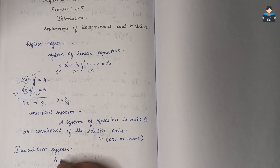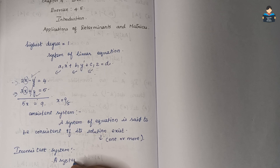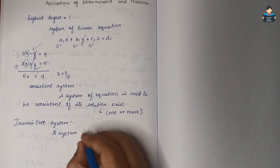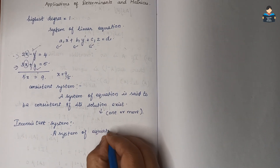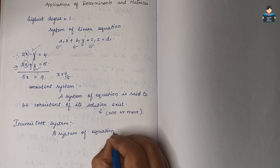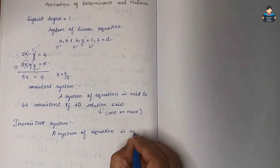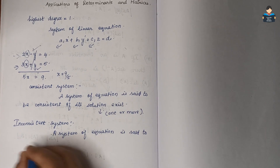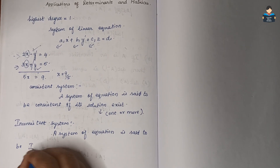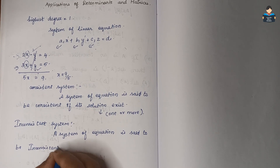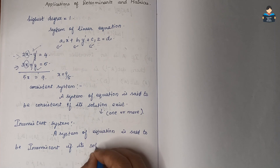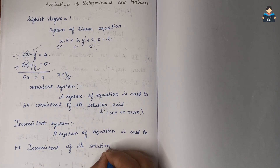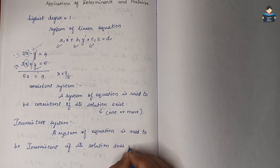An inconsistent system — a system of equations is said to be inconsistent if its solution does not exist.